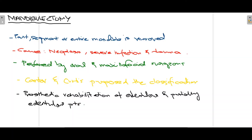Talking about what mandibulectomy actually is: if we divide this word into two parts, mandible is your jaw bone and ectomy means removal, so mandibulectomy means removal of the mandible. There are different variations as to how the mandible is removed — either some part, some segment, or the entire mandible can be removed.